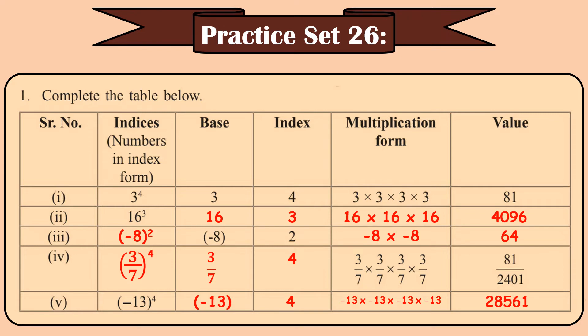Always remember: when you are multiplying negative numbers, if you have an even number of negative numbers, your answer will always be positive. Here, you're multiplying minus 13 with itself four times — 4 is even, so your answer is positive. Similarly, minus 8 into minus 8 gives 2 negative numbers, which is even, so the answer is positive. When you multiply an odd number of negative numbers, your answer will always be negative.